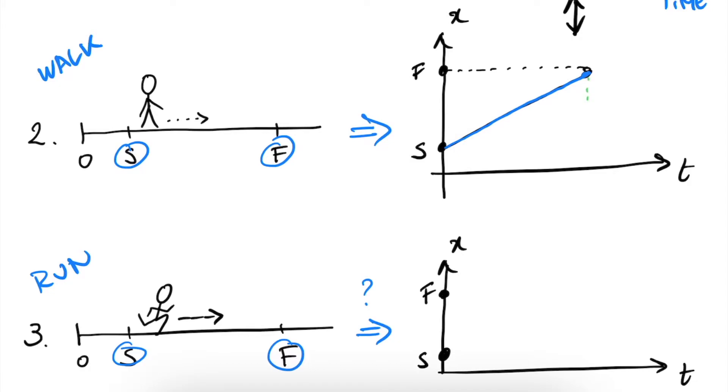If we compare it with the previous example, we got from S to F in a time, let's say 10 seconds. But now let's say we run twice, or at least twice as fast as we walk, we will see that our graph will be much steeper. So we get to F much quicker.